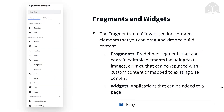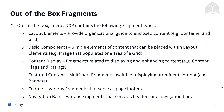The fragments and widgets section contains elements that you can drag and drop to build out content. This can be done by anyone — you don't need special technical knowledge. Fragments are predefined segments that can contain editable elements, including text, images, or links that can be replaced with custom content or mapped to existing site content. A great example is something like a banner: if I drag a banner fragment onto my page, I'll have a large section where I can drop a picture in and edit text — all at the same time. Widgets are a little more complicated since they're applications, and they can be added to the page as well.